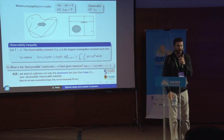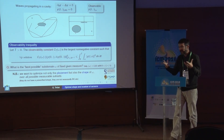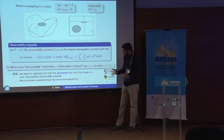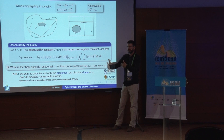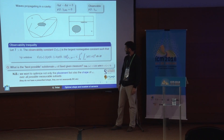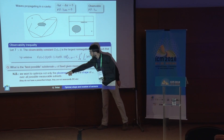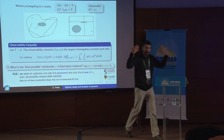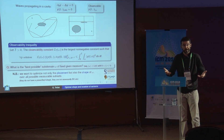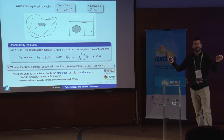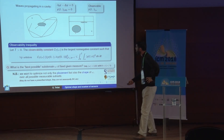Moreover, as mathematicians we address a mathematical question. We do not want to prescribe an a priori shape of omega or put any restriction on its shape. We are going to search omega over the set of all possible measurable subsets of capital omega — maybe not BV or whatsoever. We want to know if there is a very best observation subset.